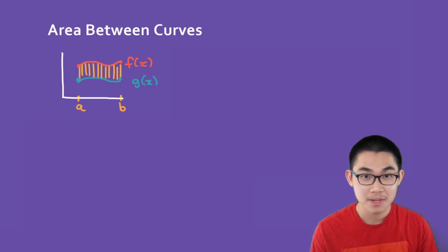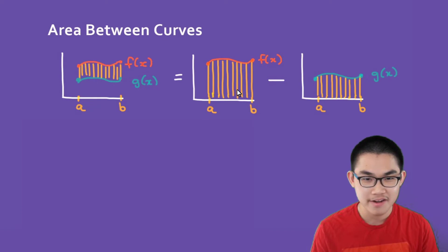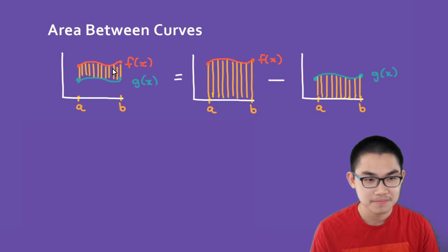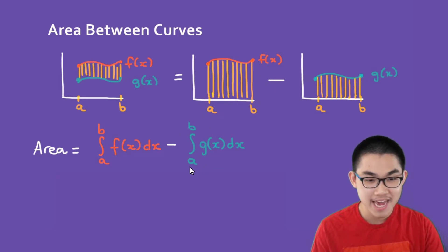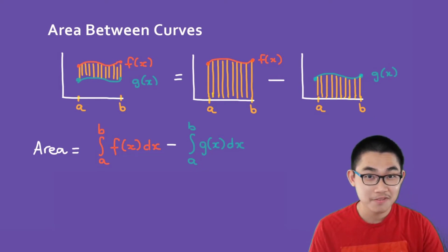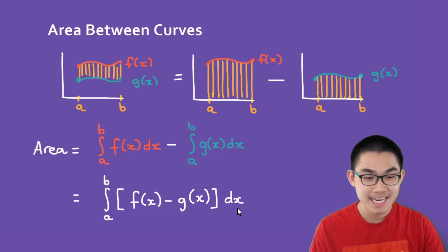So let's say you want to find the area between the curve f of x and g of x — basically that's this area right there. You can find the area under the curve f of x and minus the area under the curve g of x, which gives you the difference in area. So the area equals the integral from a to b of f of x dx, minus the integral from a to b of g of x dx. You can smash the two integrals together: that simplifies to the integral from a to b of f of x minus g of x dx. That is the first formula for finding the area between curves by integrating with respect to x.